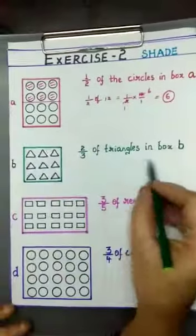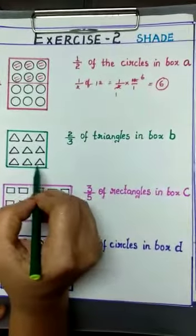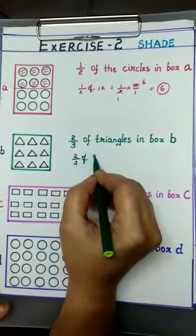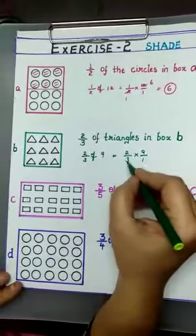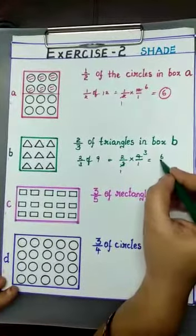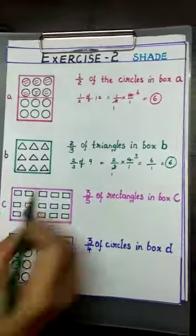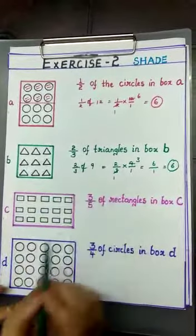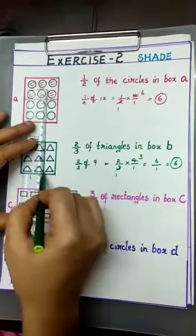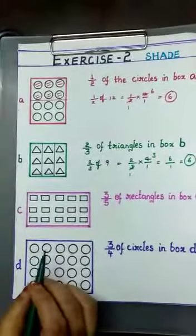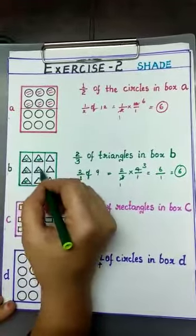Next: 2/3 of the triangles in Box B. There are 9 triangles in Box B. So 2/3 of 9 means 2/3 into 9/1. Simplify: 3 ones and 3 threes; 2 threes are 6, giving 6 by 1, which is 6. So shade 6 triangles. Since the denominator is 3, divide into 3 equal parts of 3 triangles each, then shade any 6.